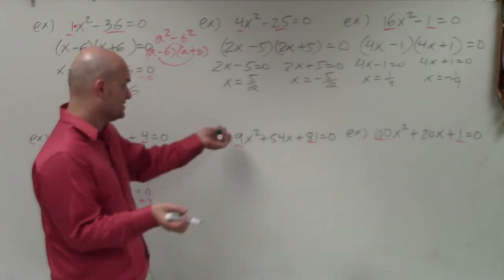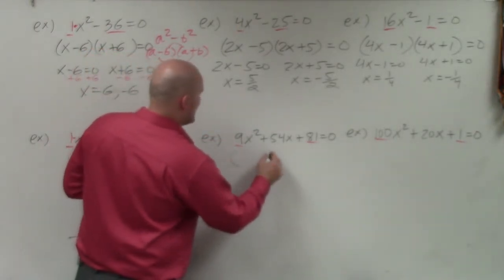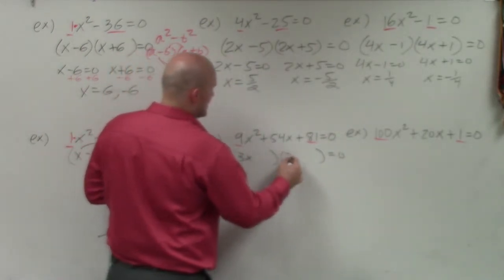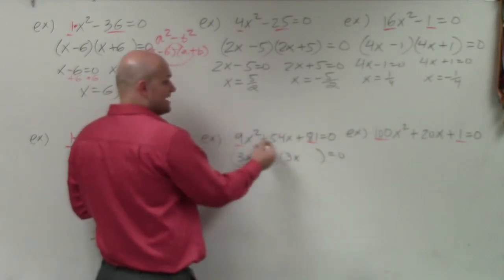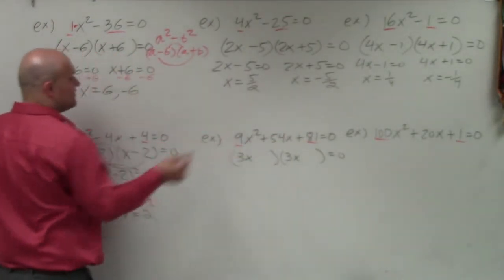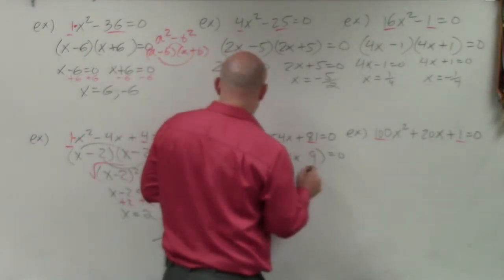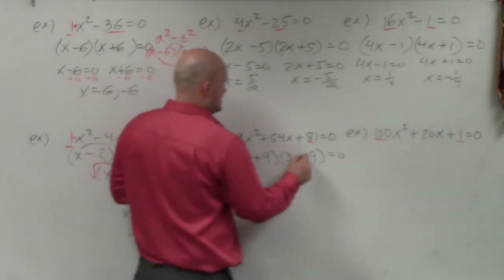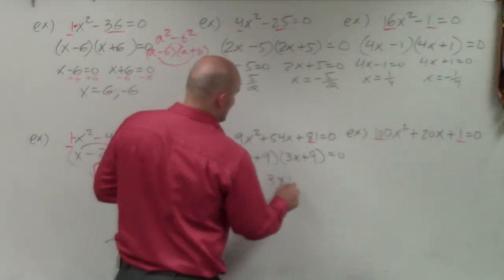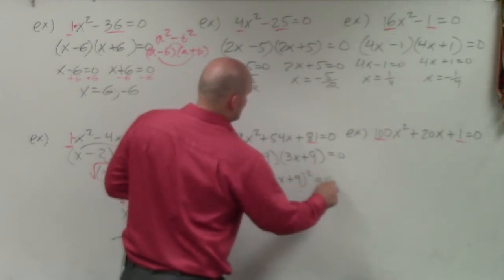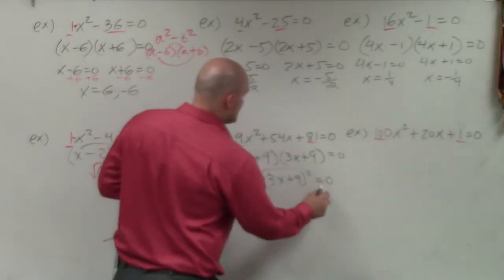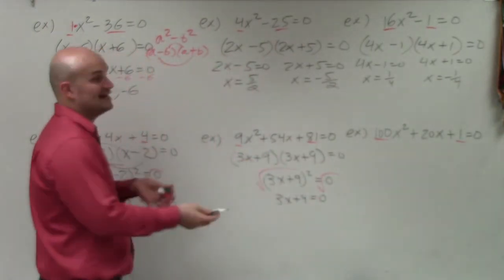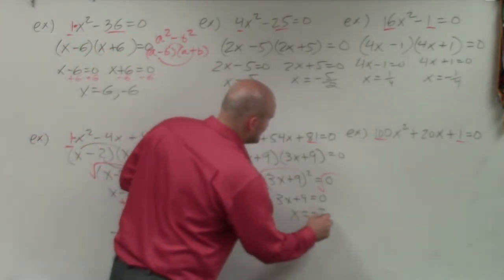In this example we have a coefficient in the front, but that's fine — we use the same approach. So 3x times 3x, and 9 times 9. Since the middle term is positive, both 9's are also going to be positive. That gives us (3x plus 9) squared equals 0. Taking the square root on both sides gives 3x plus 9 equals 0. Subtracting 9 and dividing by 3 gives x equals negative 3.